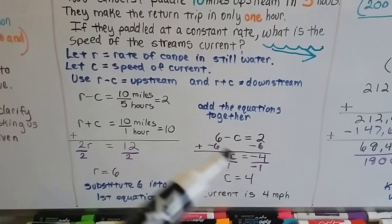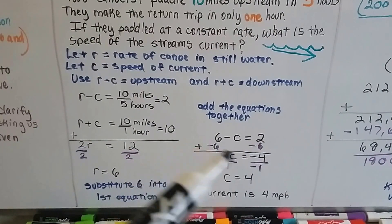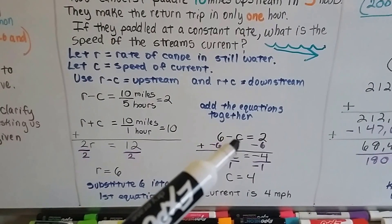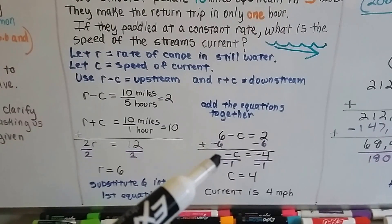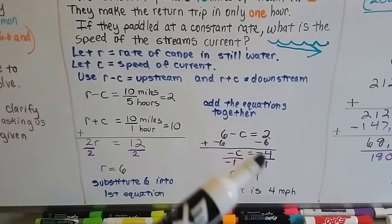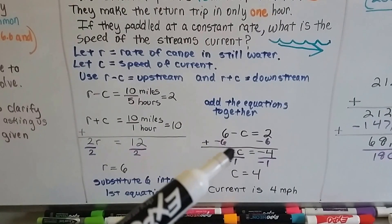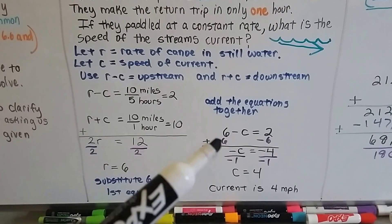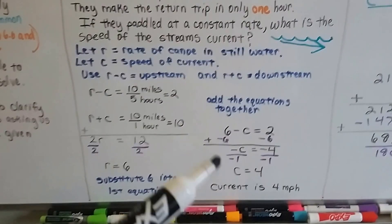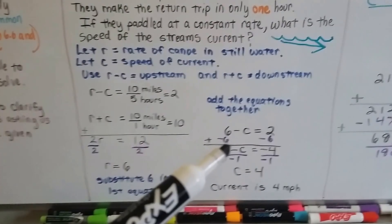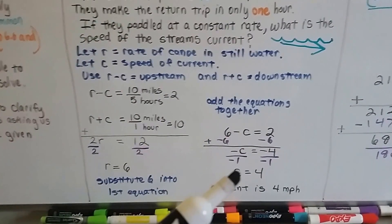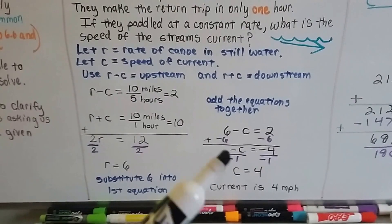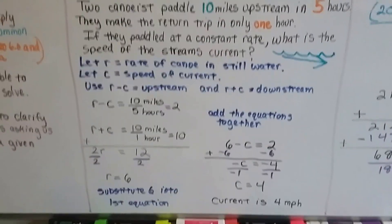We can add a negative six to each side of the equation to isolate this negative c here. So we add a negative six, and we get negative c equals negative four. Now remember there's an invisible one in front of that c, the invisible one coefficient, so we can divide each side by that negative one, so that we can get rid of this negative here. And the two negatives make a positive, so we end up with c equals four. So we know the current's four miles per hour.